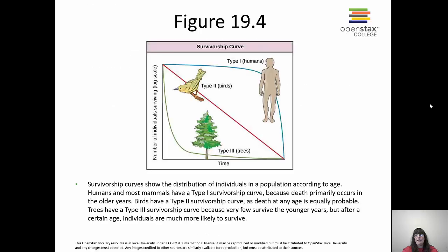Looking at the survivorship curves: type one on top represents humans — very little mortality in early ages, and most deaths occurring at older ages. Type two, which includes rodents and birds, shows a steady, constant decrease in survival over time. Type three shows a high mortality rate early in life, with very few individuals surviving to live a longer life.